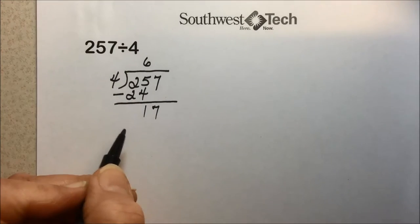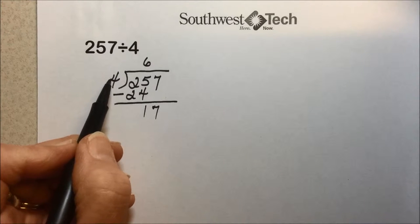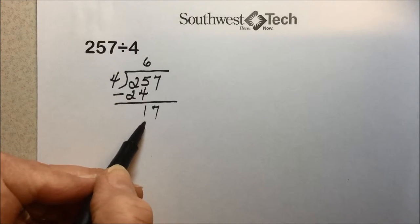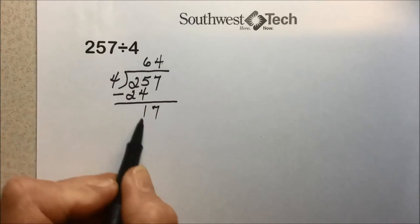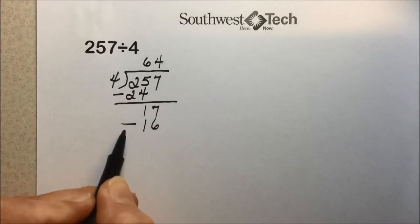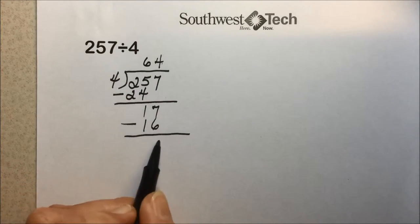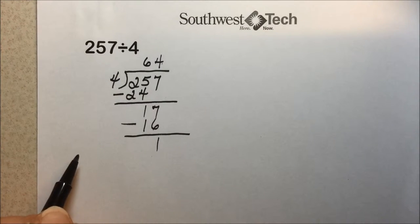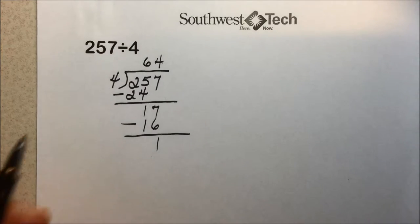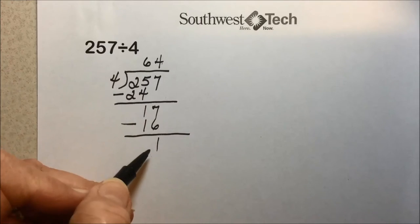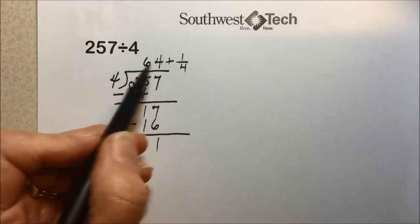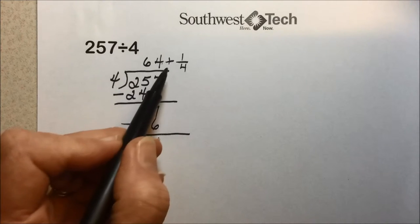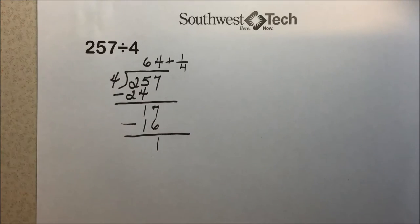Bring down the next value. What times 4 gives a 17? As near as we can get is a 4. 4 times 4 is 16. We subtract. 17 minus 16 leaves 1. We could do a decimal and so on, or we could say we have a remainder of 1 fourth. So 64 times 4 plus our remainder of 1 fourth would give us our answer of 257.